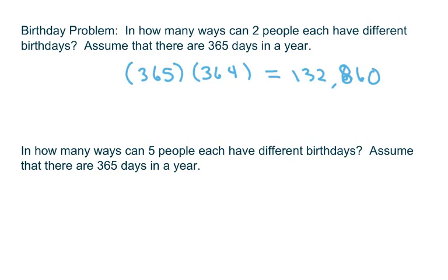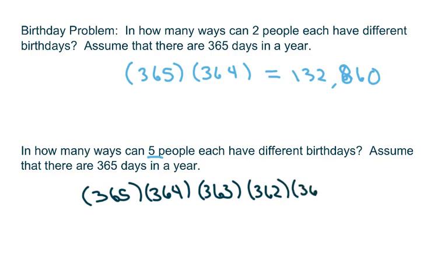Okay, and this one we have five people have different birthdays, so we do the same thing but it's just going to be 365 times 364 times 363 times 362 times 361. So when you multiply all that out...